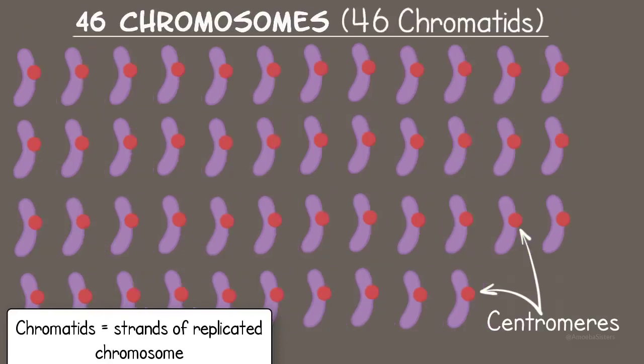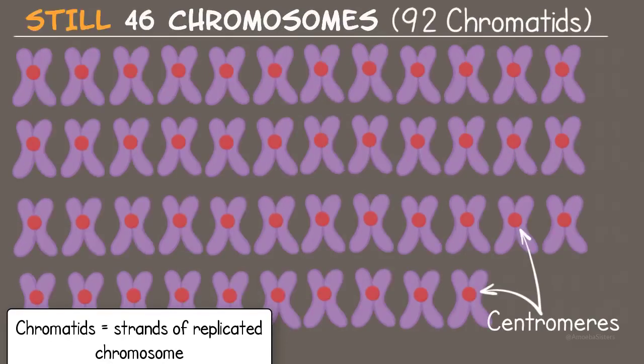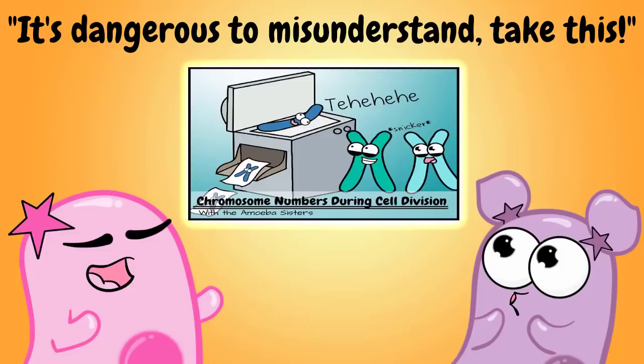Because the sister chromatids are still attached and we are actually counting by centromeres. So 46 chromosomes here, they replicate in interphase, and you still have 46 chromosomes in this picture. But you went from 46 to 92 chromatids. Little tricky there. We have a detailed video that explains these chromosome numbers before and after replicating in interphase that can be useful for meiosis.